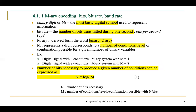Now let's look at several parameters in digital communication: M-array, bits, bit rate, and baud rate. A bit, or binary digit, is the most basic digital symbol used to represent information. Bit rate is the number of bits that can be transmitted in one second, with units of bits per second. M-array is derived from the word binary — M represents the number of conditions or levels. For example, four conditions means M equals 4, eight conditions means M equals 8.